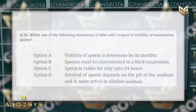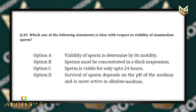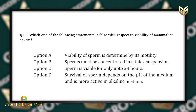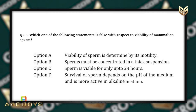Now let's see question number 83: Which one of the following statements is false with respect to viability of mammalian sperm? Option A: Viability of sperm is determined by its motility. Option B: Sperm must be concentrated in a thick suspension. Option C: Sperm is viable for only up to 24 hours. Option D: Survival of sperm depends on the pH of the medium and is more active in alkaline medium.